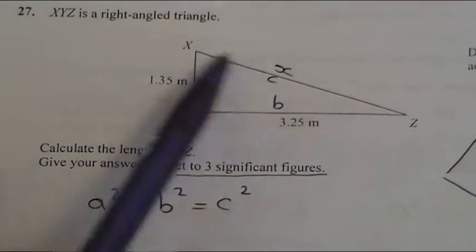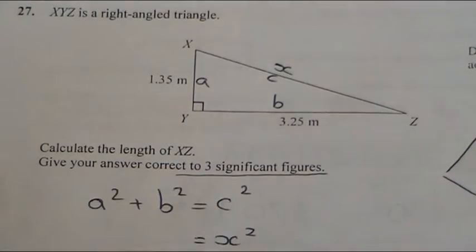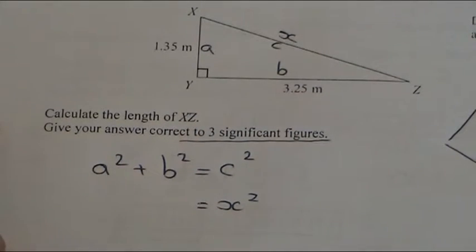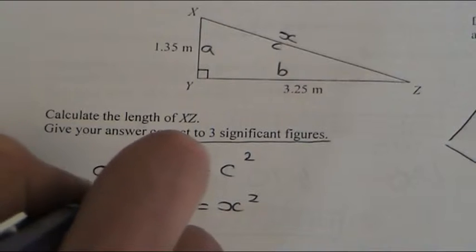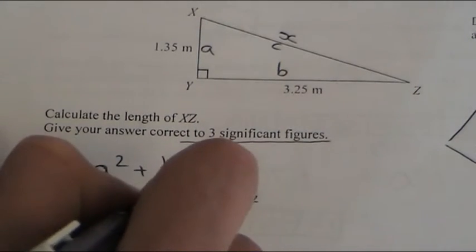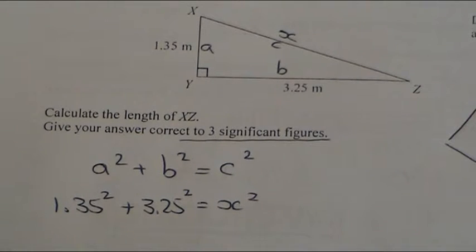I know that this side squared - I'm just going to write that down. So x² is going to equal 1.35² plus 3.25². There we have it.